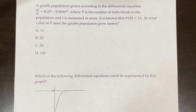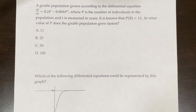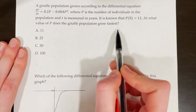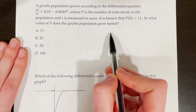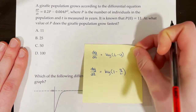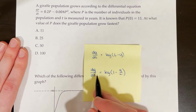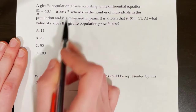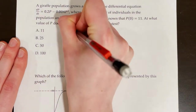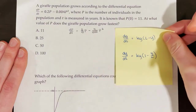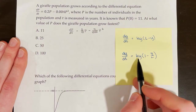A giraffe population grows according to dp/dt equals 0.2p minus 0.004p squared, where p is the number of individuals and t is in years, with p(0) equals 11. At what value of p does the giraffe population grow fastest? The population grows fastest at half of the carrying capacity, so we need to find L by rewriting the equation in standard form.